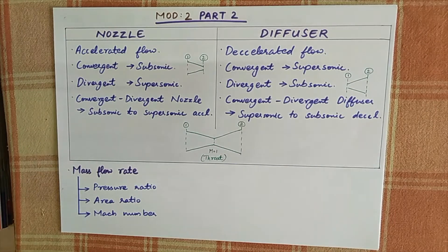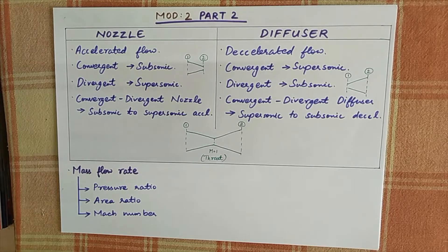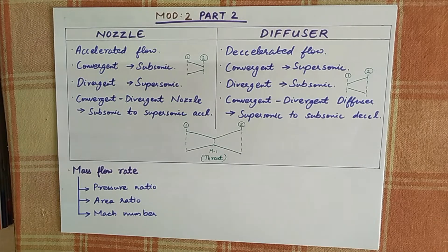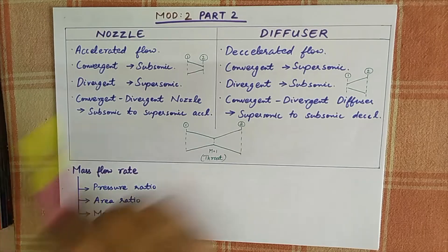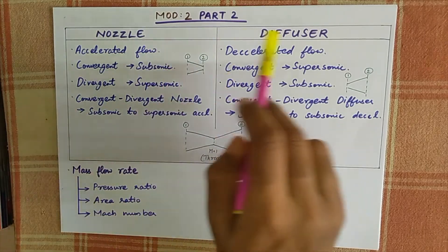Welcome back to part 2 video lecture of CFF module 2. In the previous video, we discussed about isentropic flow, derived some basic equations, and found out area ratio and how area ratio depends on Mach number. In this video, we will discuss about nozzles and diffusers.